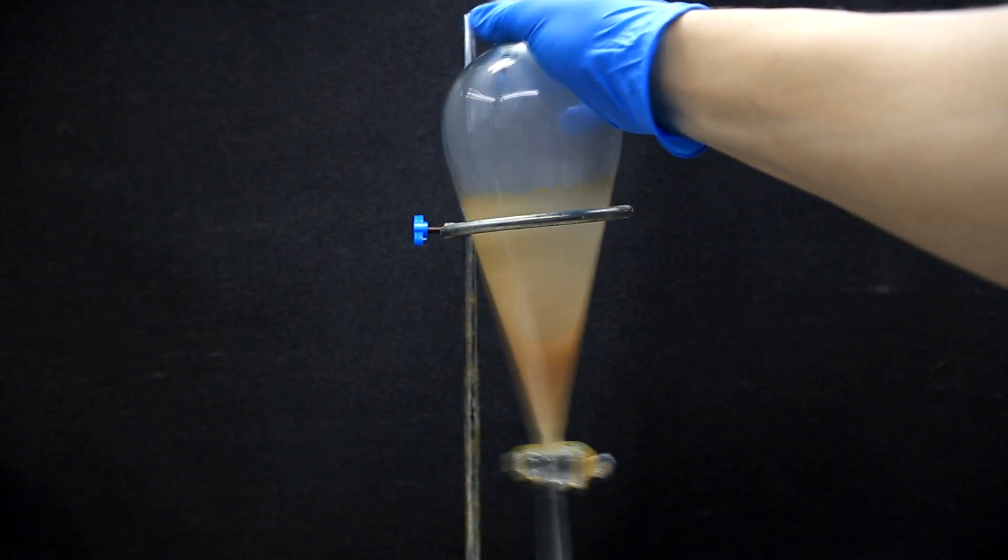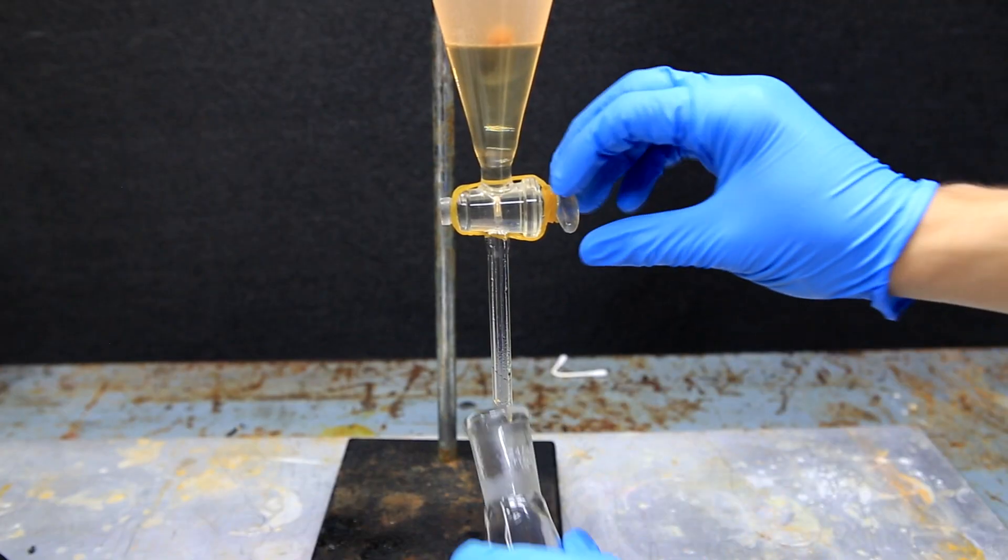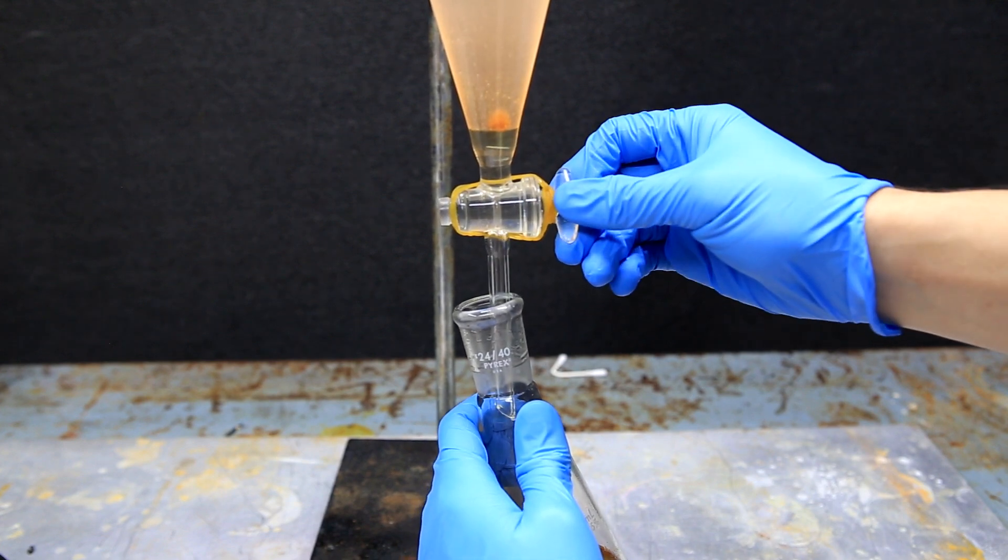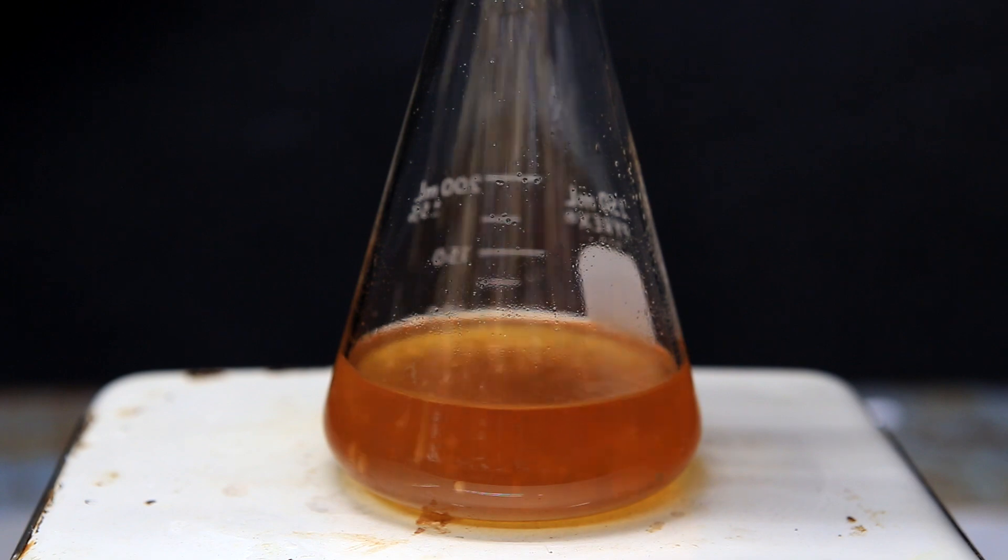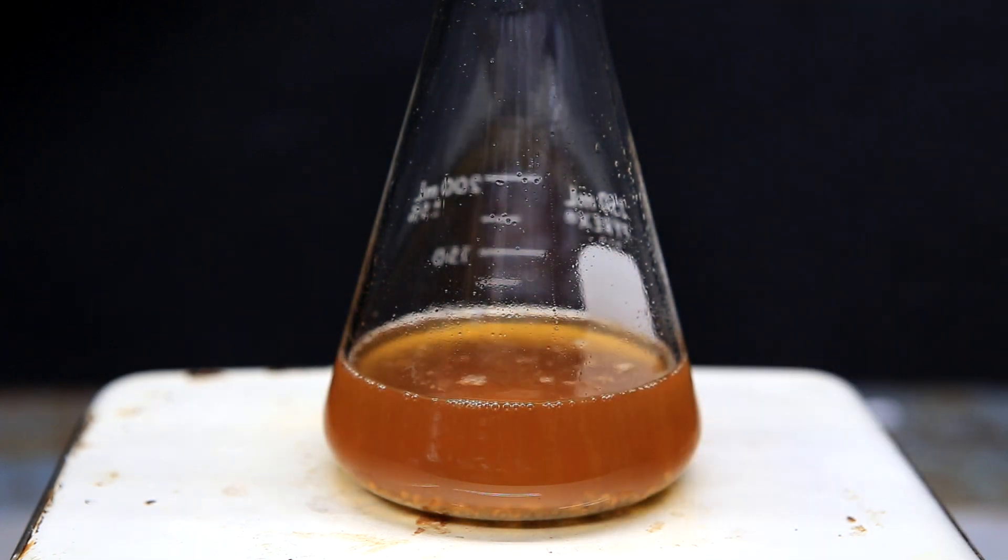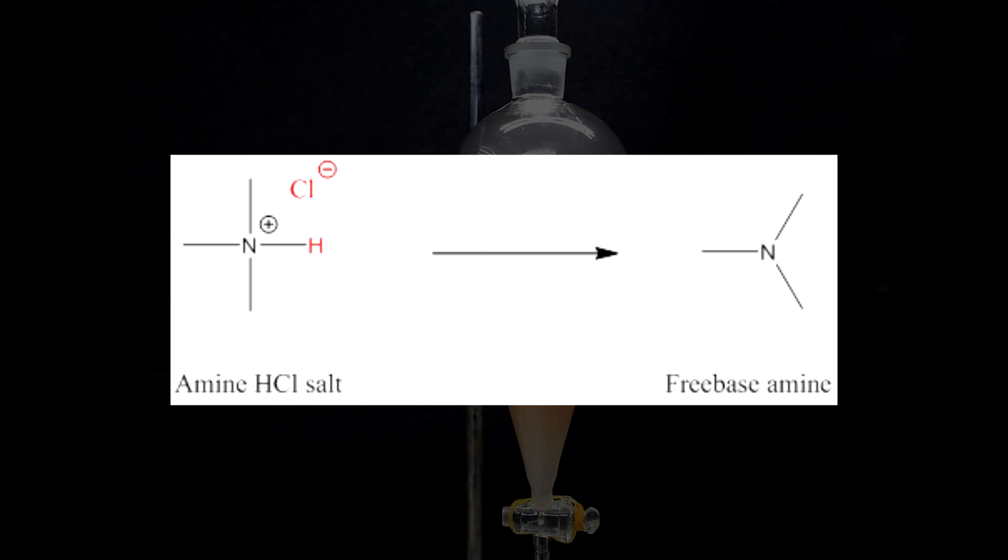In this video we're going to be doing a little bit of freebasing. When people think of freebasing, the first thing that pops into their head is usually drug related. However, this process is definitely not something that's only used for making drugs. In very simple terms, freebasing simply means converting an amine from its salt form to its pure form.